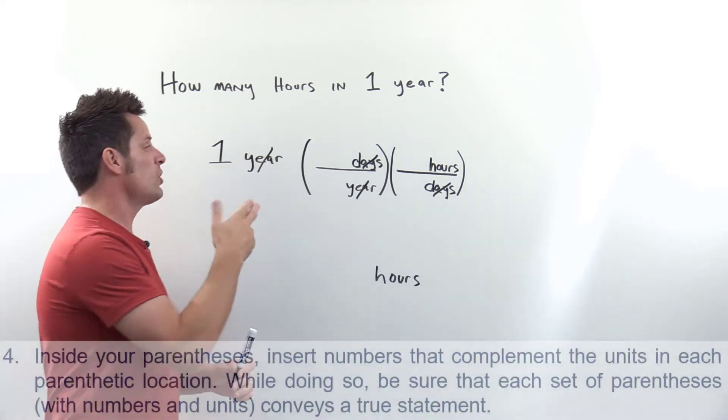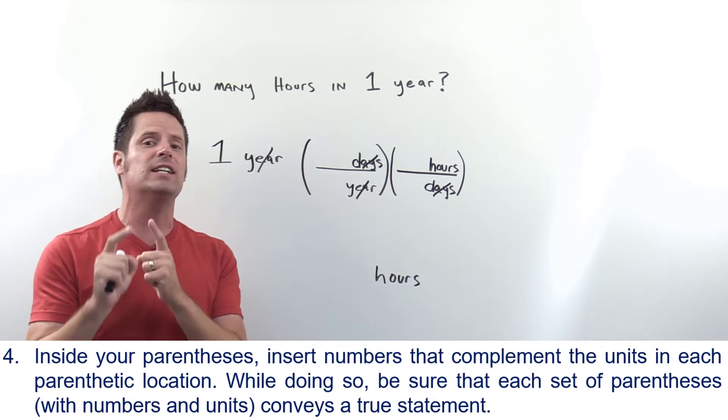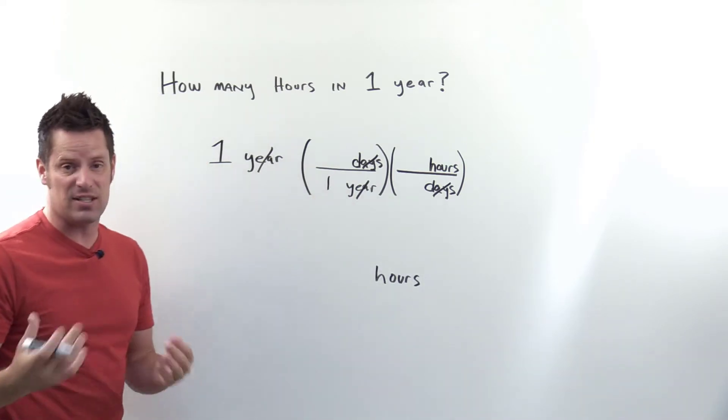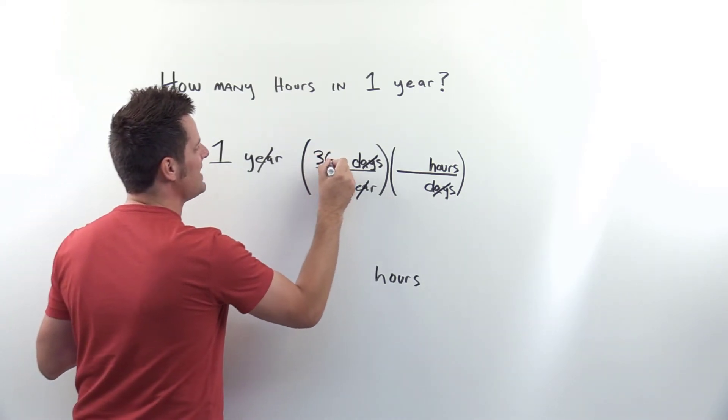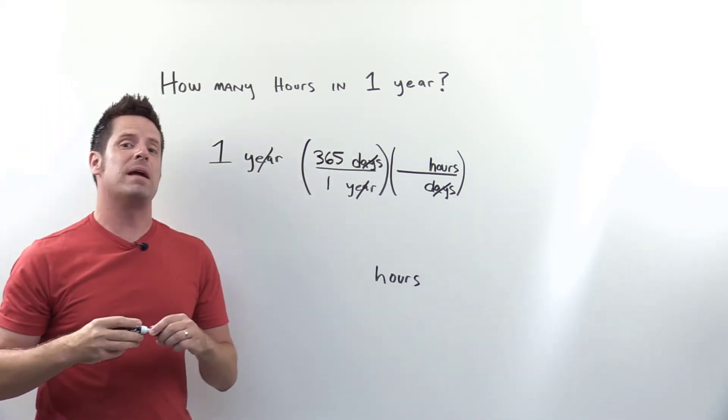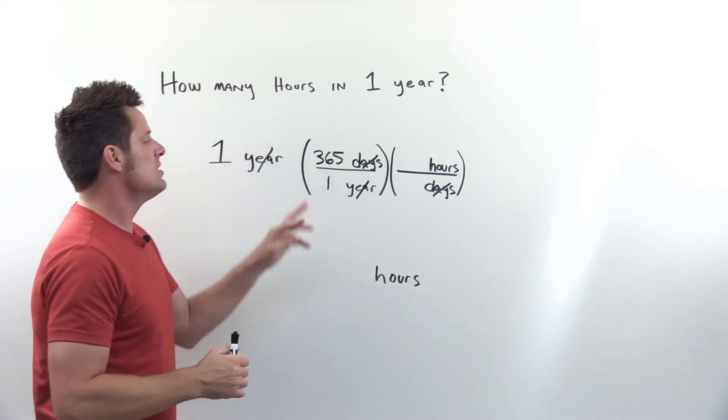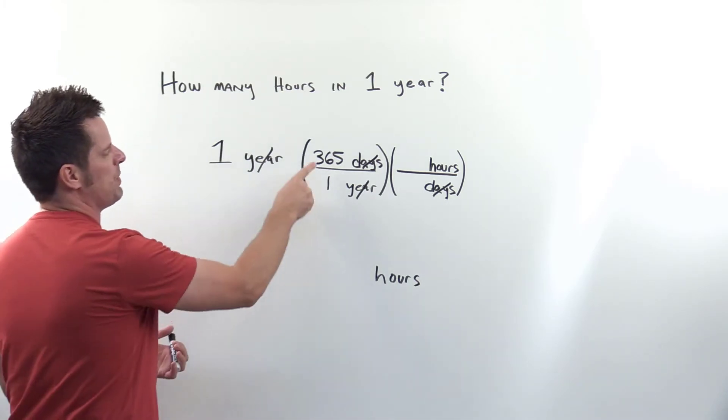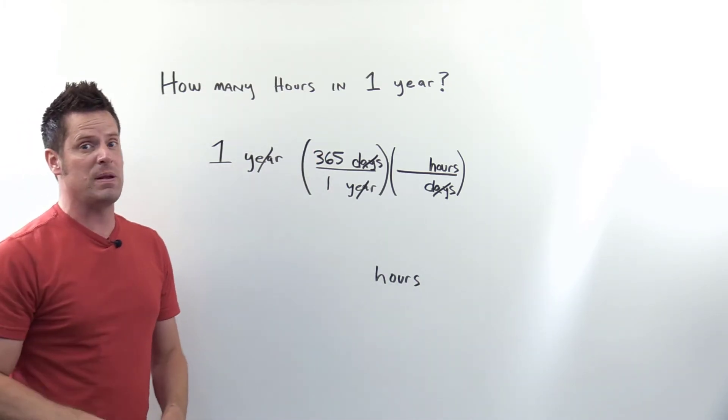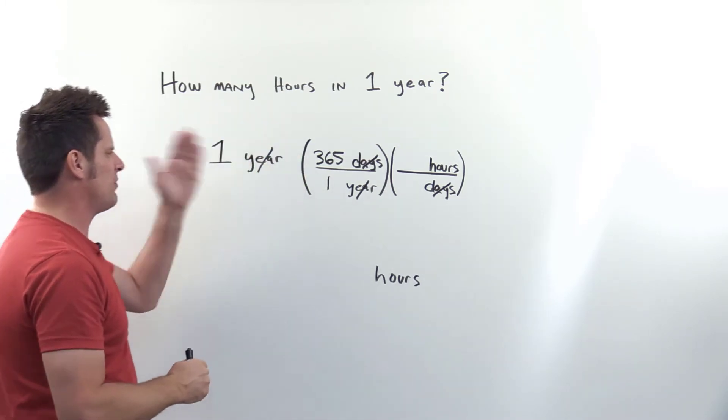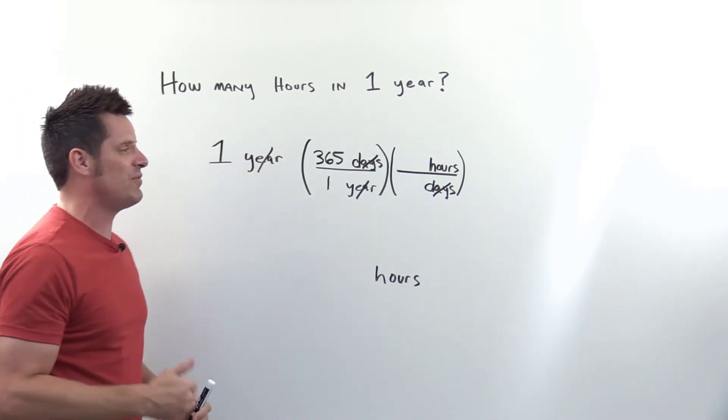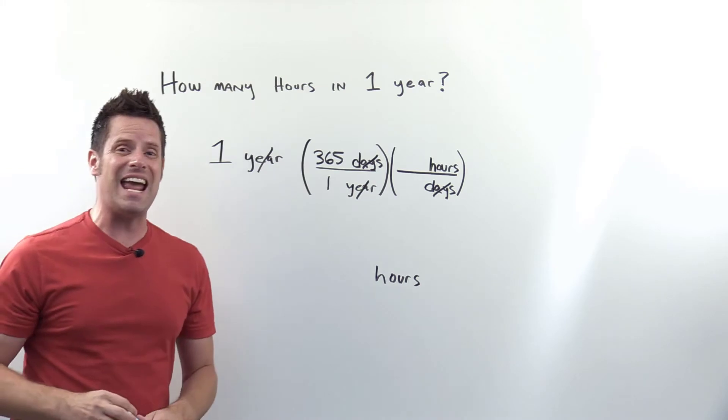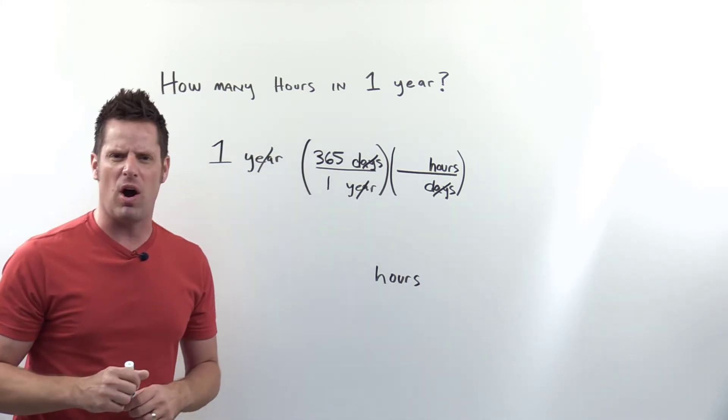Step four is to insert all your numbers in their respective locations. One year has how many days? 365. Anytime I write down numbers, I step back and make sure I put them in the correct location because it's easy to flip them if you're being too quick. I write down the numbers then ask myself: did I put them in the right location? Are there 365 days in one year? Yes, that's correct.